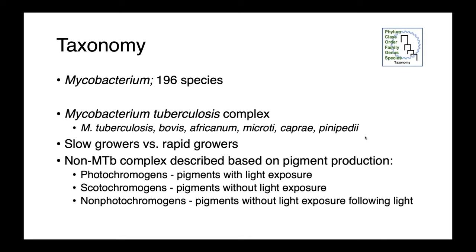There are 196 species of mycobacterium, grouped in a number of different ways. We have our mycobacterium tuberculosis complex, which includes tuberculosis, bovis, africanum, mycobacterium caprae, and pinnipedi, and then our non-tuberculous mycobacterium — kind of everything else. We can group them by the speed at which they grow: slow growers and rapid growers. Non-mycobacterium tuberculosis complex can also be described based on pigment production: photochromogens, which produce pigment on light exposure; scotochromogens, which produce pigment without light exposure; and non-photochromogens, which produce pigment without light exposure after they've had exposure to light.